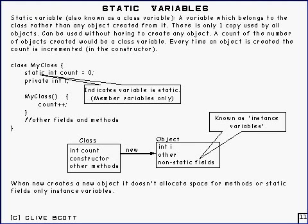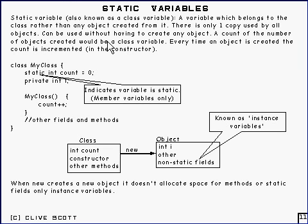There are two types of variables you can think of: static variables and instance variables. Static variables are variables which apply only to the class itself and not to the object. A typical example of a static variable — also known as a class variable — is a count of the number of objects that get created.